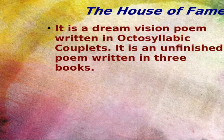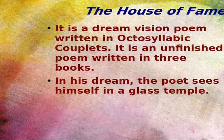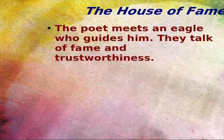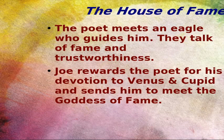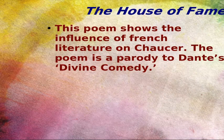The third important work of Chaucer was the House of Fame. It is a dream vision written in octosyllabic couplets. It is an unfinished poem written in three books. In this poem, the poet falls asleep and sees himself in a glass temple in his dream, adorned with pictures of famous and virtuous people. The poet meets an eagle who serves as a guide. They talk of fame and trustworthiness. The eagle was a servant of Jove, who offers a reward to the poet for his devotion to Venus and Cupid by sending him to the House of the Goddess of Fame. The Goddess of Fame had countless eyes and tongues. It shows the influence of French literature on Chaucer, and it served as a parody of Dante's Divine Comedy.